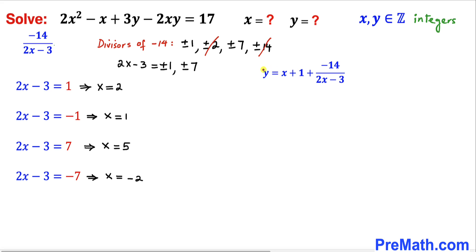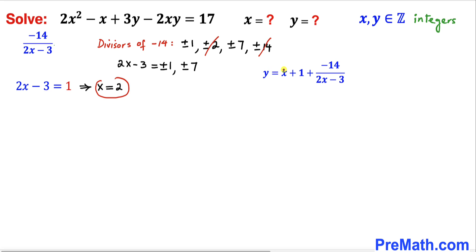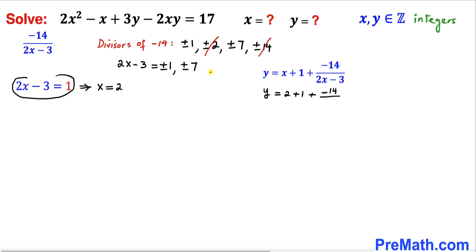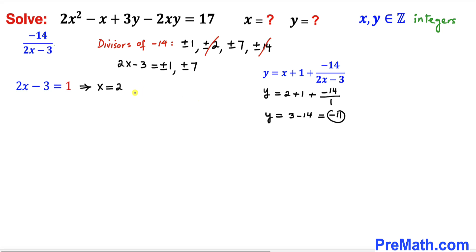Now we find y by plugging these x values in. For x equals 2: y equals (2 plus 1) plus (negative 14) divided by 1, since 2x minus 3 equals 1 in this case. So y equals 3 minus 14, which gives y equals negative 11.